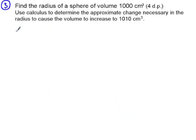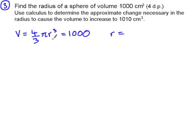The volume of a sphere is found using the formula four-thirds pi r cubed and we want the radius of a sphere with a volume of 1,000 cubic centimetres. Solving for r gives us 6.2035 centimetres to four decimal places.